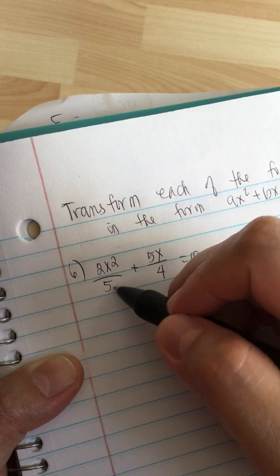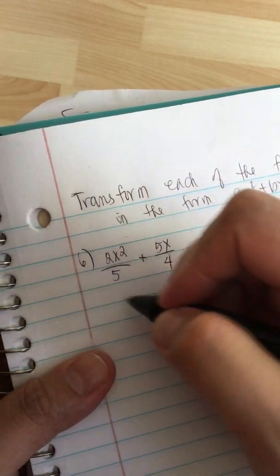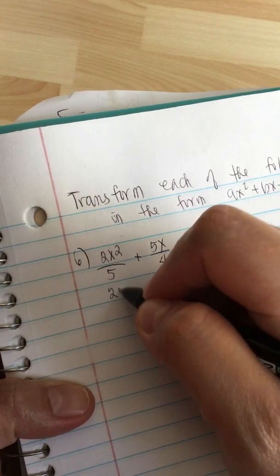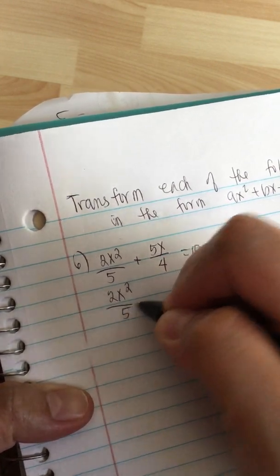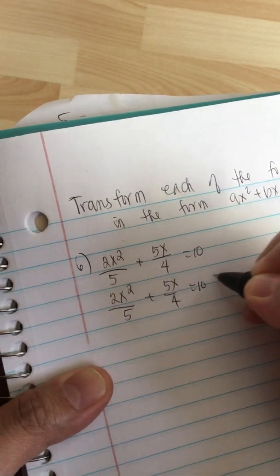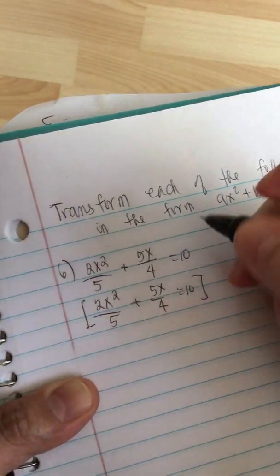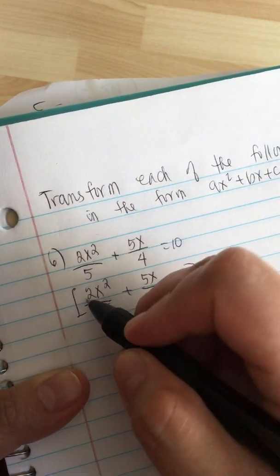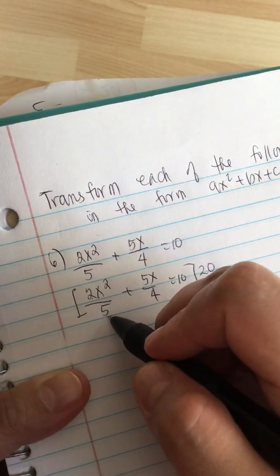We can't add these because they don't have the same denominator, so we find the LCM. We have 2x squared over 5 plus 5x over 4 equals 10, and we multiply it by 20.